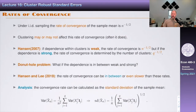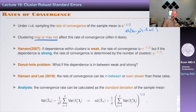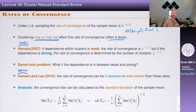Under IID sampling, the rate of convergence of the sample mean is square root N — meaning square root N times (X-bar minus mu) converges in distribution to some normal. Clustering may or may not affect this rate of convergence; the funny thing is that the rate is unclear. Hansen (2007) — that's Chris Hansen at Booth, whose job market paper this was — showed that if dependence within the cluster is weak, the rate is square root N, but if dependence is strong, the rate is determined by the number of clusters.